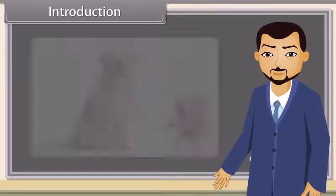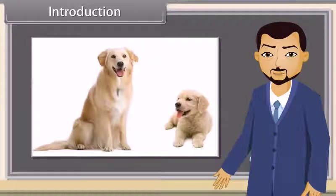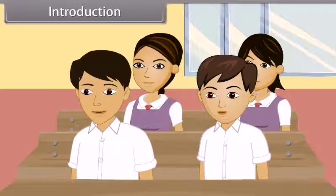Introduction. What can you see in this picture? We can see a dog and its puppy. Correct.